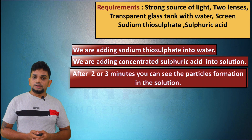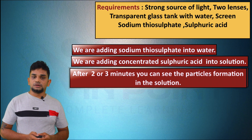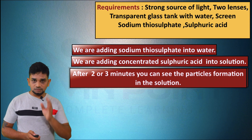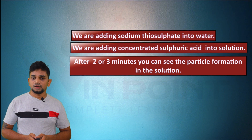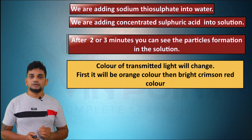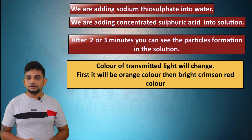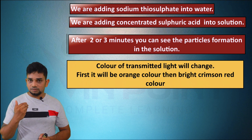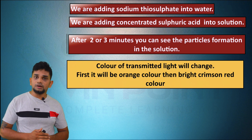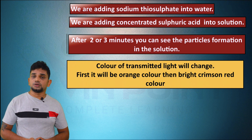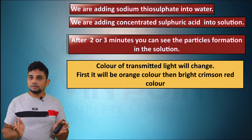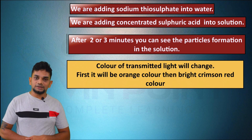In summary: we add sodium thiosulfate to water, then concentrated sulfuric acid. After two or three minutes, particle formation is visible in the solution. The observed color of transmitted light changes first to orange, then to bright crimson red. This proves that wavelength of color is inversely proportional to rate of scattering — lower wavelength means more scattering, higher wavelength means less scattering.